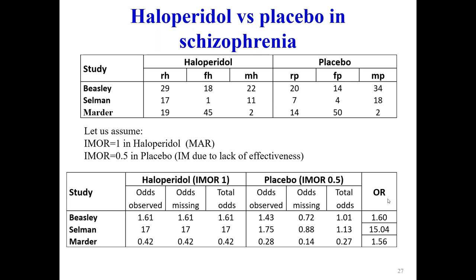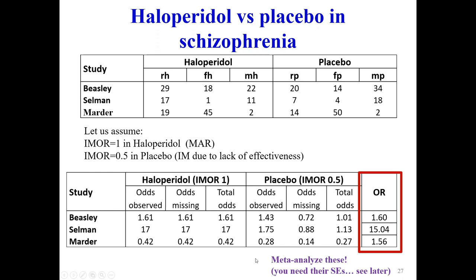Let's see an example with haloperidol versus placebo. I have three studies and I assume IMOR equals one in haloperidol — missing at random — but IMOR equals 0.5 in placebo, meaning participants in placebo did worse and left because they saw no improvement. The odds in observed and missing participants in haloperidol are the same. In placebo, the odds of missing is half the odds of observed. The total odds is a weighted average of observed and missing odds, then I compute an odds ratio for each trial.